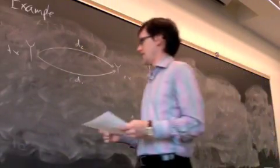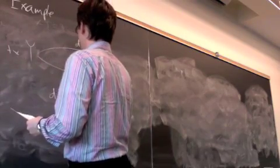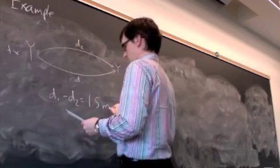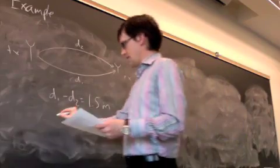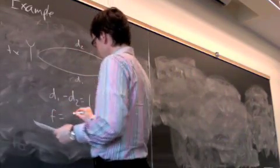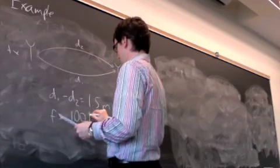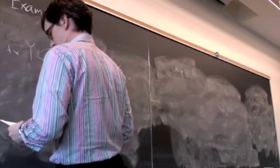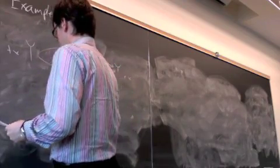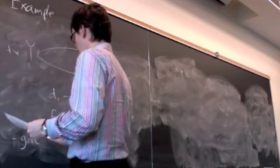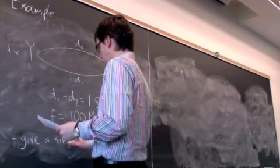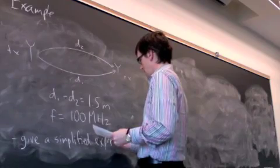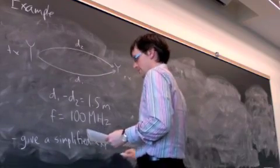So in this example we're going to say D1 minus D2 is equal to 1.5 meters, and the frequency is 100 megahertz. And we'll say, give a simplified expression for the received signal.